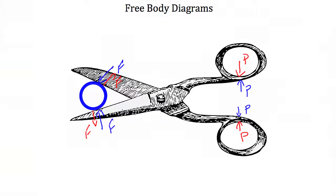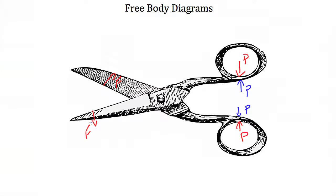There are several free body diagrams we can create from this situation. We could look at the free body diagram of the scissors — to do that we take away everything that isn't part of the scissors, including the cardboard tube. When we draw the FBD, we don't include forces the scissors are exerting on the world. We only care about the forces the world is putting on the scissors, such as the force the tube is putting on the scissors.